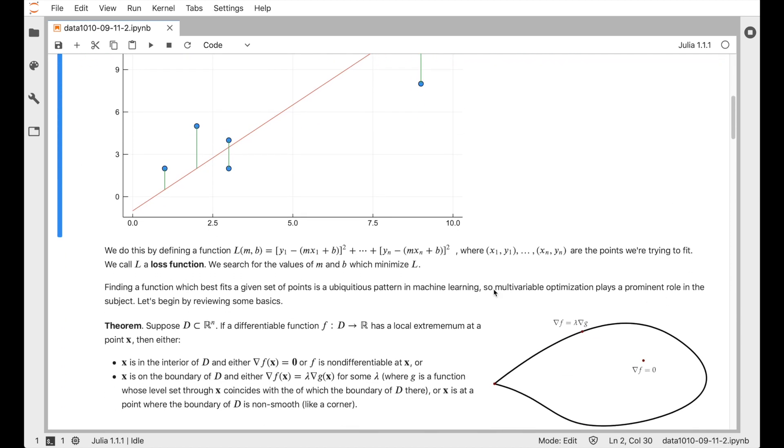One way to formalize this is to define this function capital L, which we call the loss function, which keeps track of the sum of squared distances. So this is the function that we're trying to minimize when we choose our parameters m and b. This is a really simple example, and it's possible to solve this problem with linear algebra and not use calculus at all.